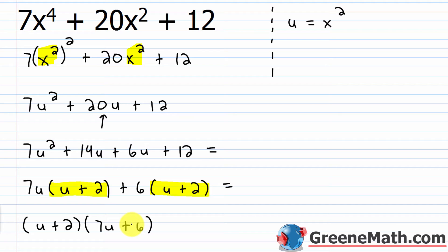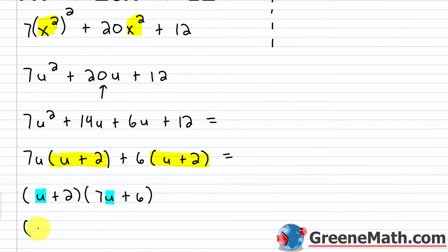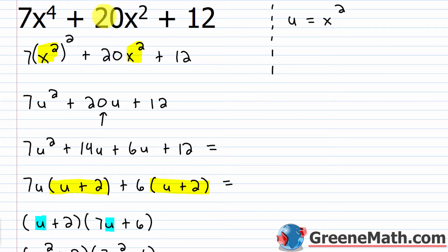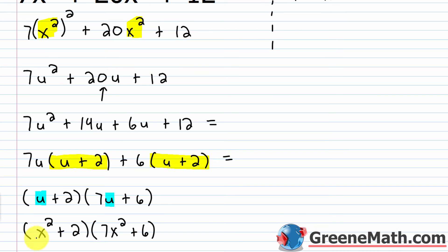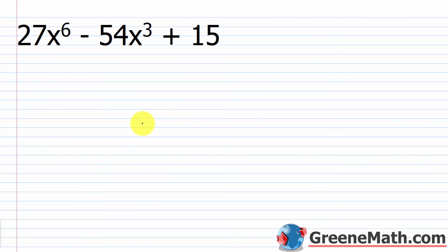If I'm taking a test and I'm asked to factor this, can I report (u + 2)(7u + 6) as my answer? No — I made a substitution, so I've got to substitute back. Since u equals x squared, I replace every u with x squared. My final answer is the quantity (x squared + 2) times the quantity (7x squared + 6). That's how we factor 7x to the fourth plus 20x squared plus 12 using simple substitution.